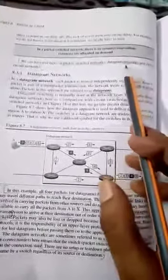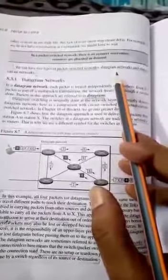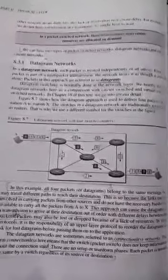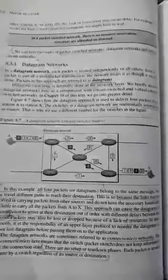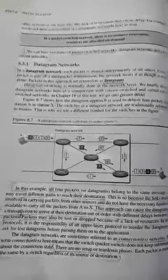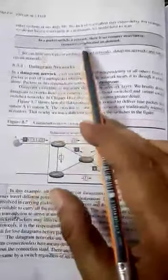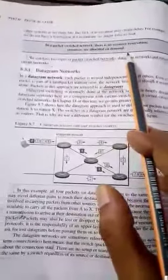The first thing is resource allocation. In a datagram network, the resources are not reserved. In a circuit switched network, a path is established and resources are reserved for the full data transfer. But in a packet switched network, there is no resource reservation — the resources are allocated on demand.